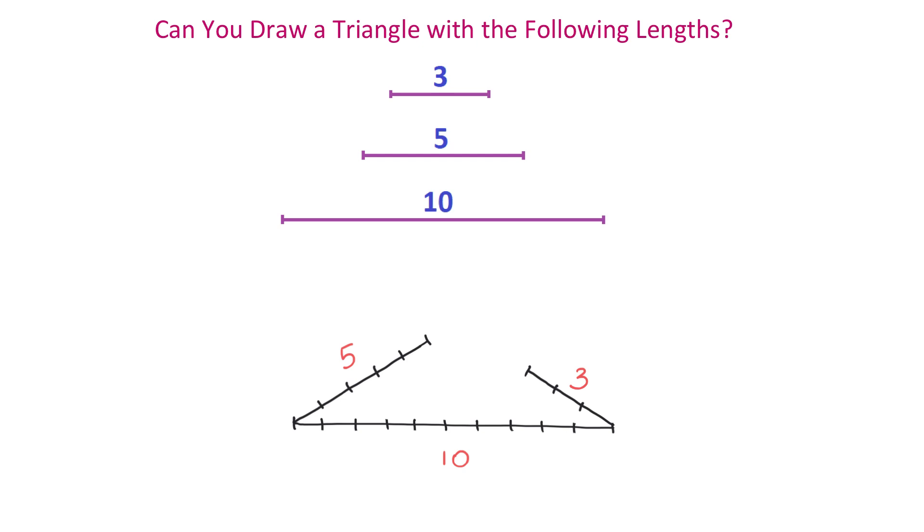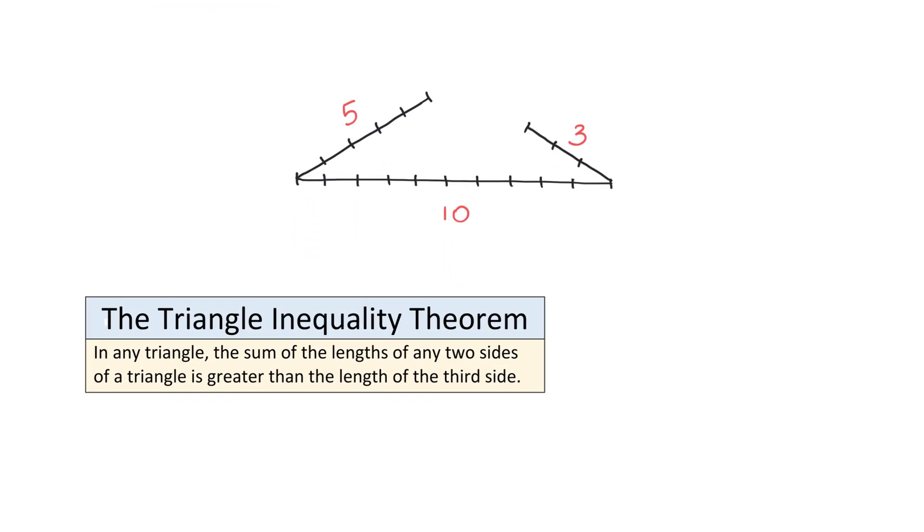If we add their lengths of 5 and 3, we will get a number that is less than 10. But to be able to form a triangle, we need the sum of the lengths of any of the two sides in a triangle to be greater than the lengths of the third side. This rule is called the triangle inequality theorem.